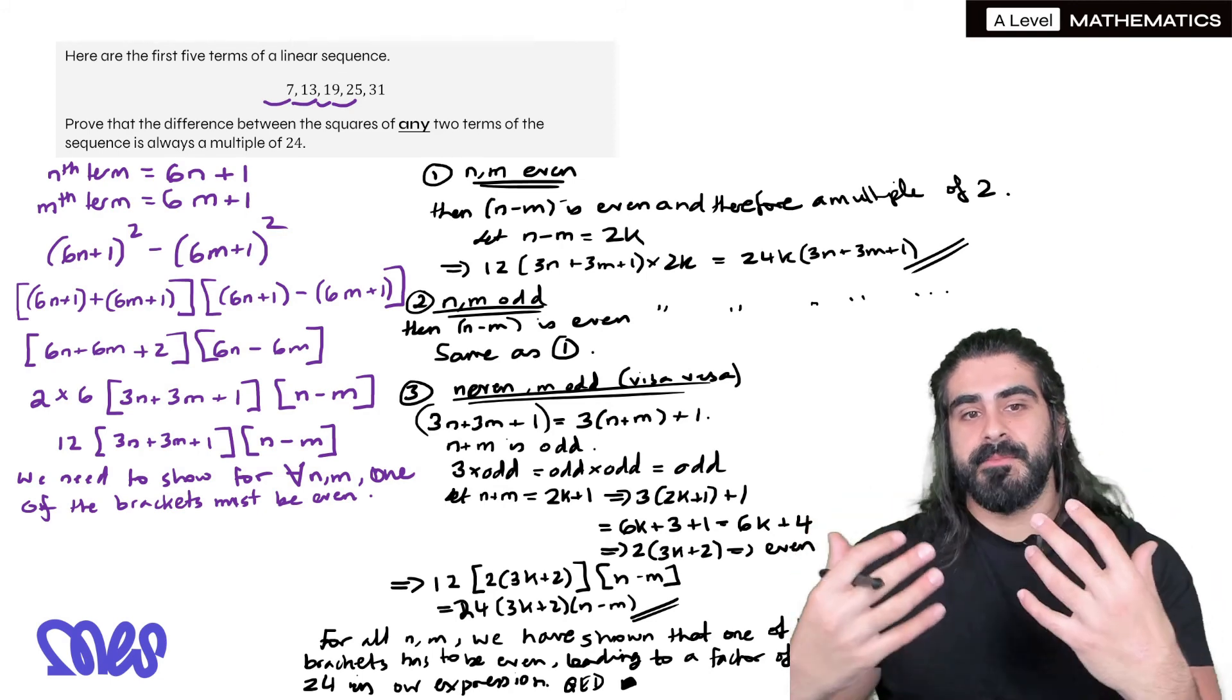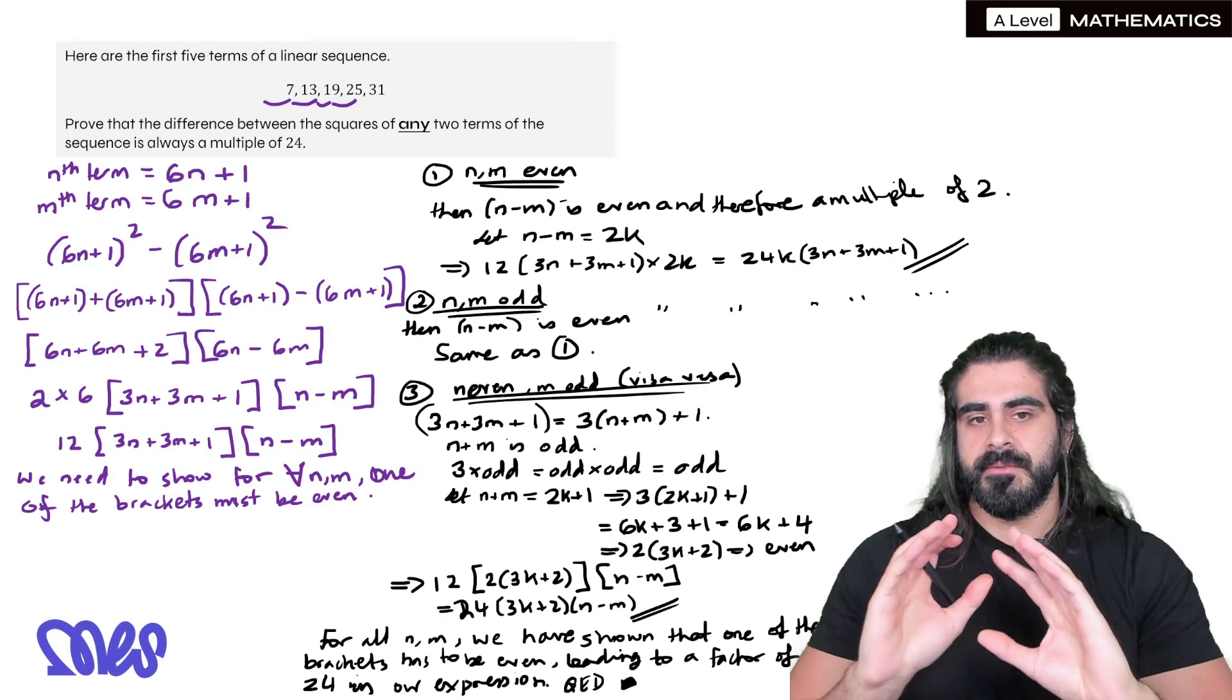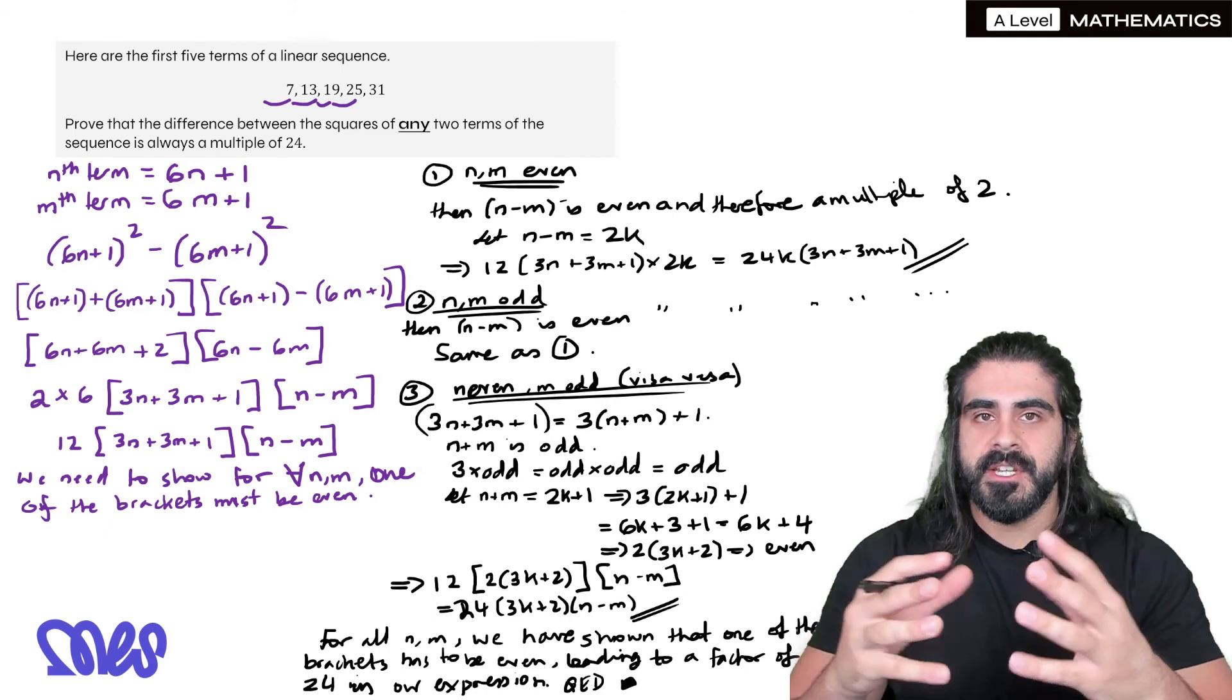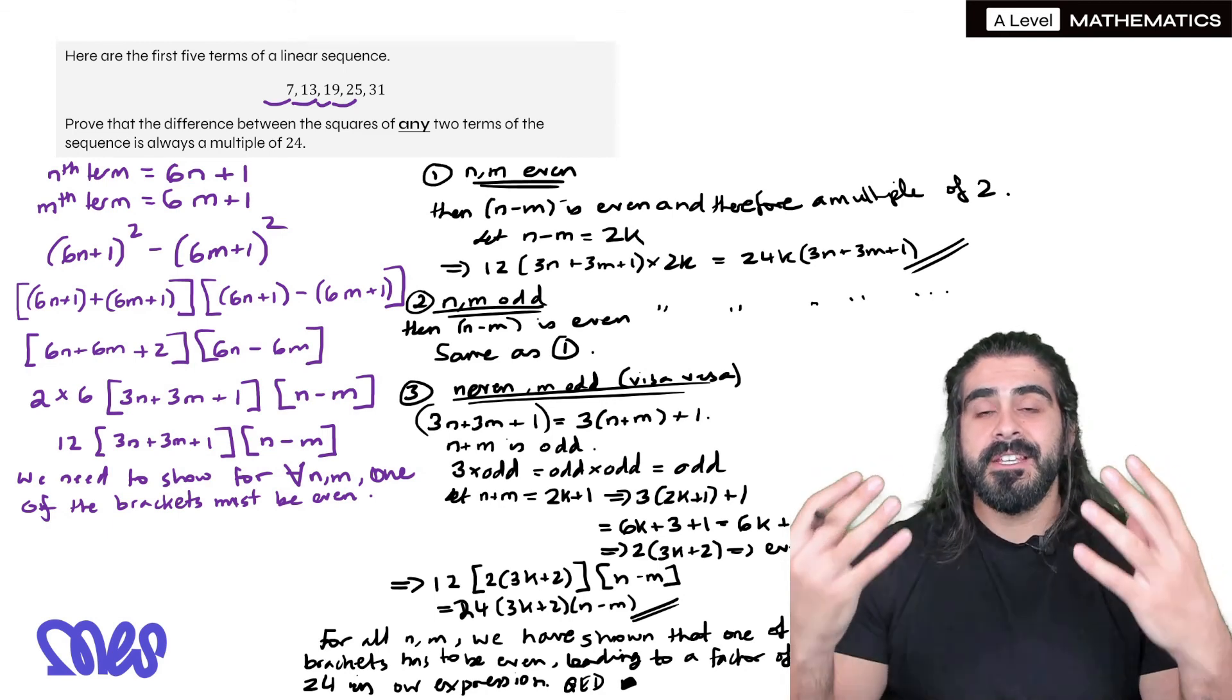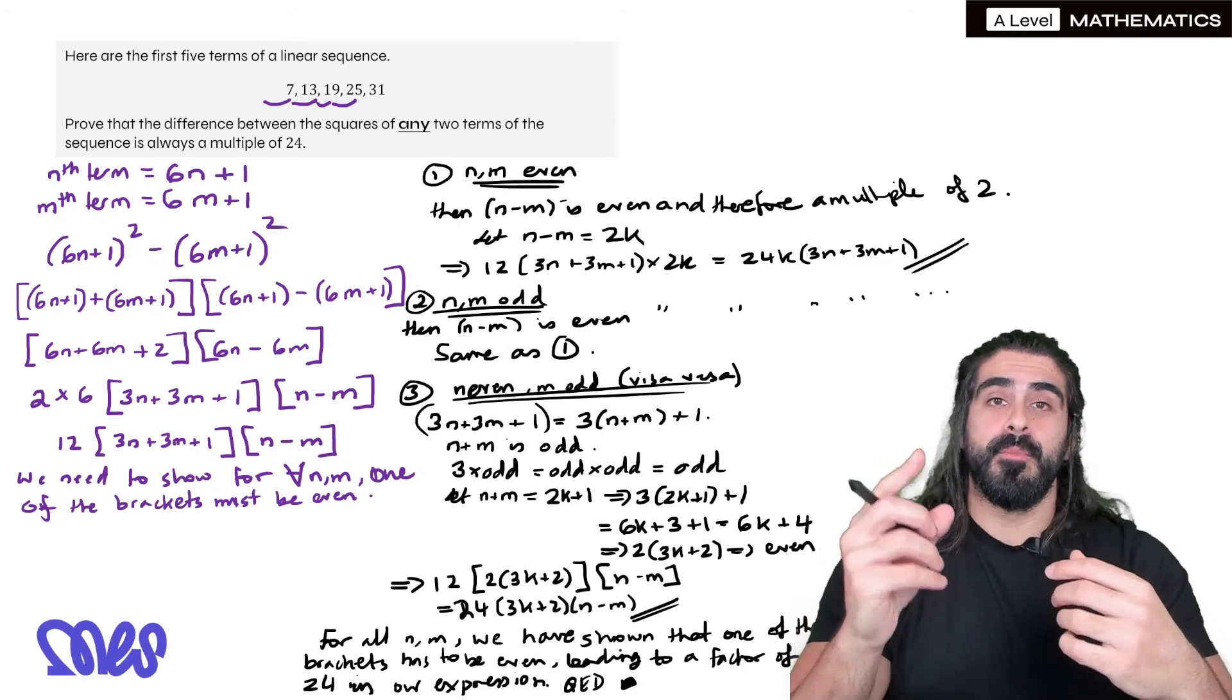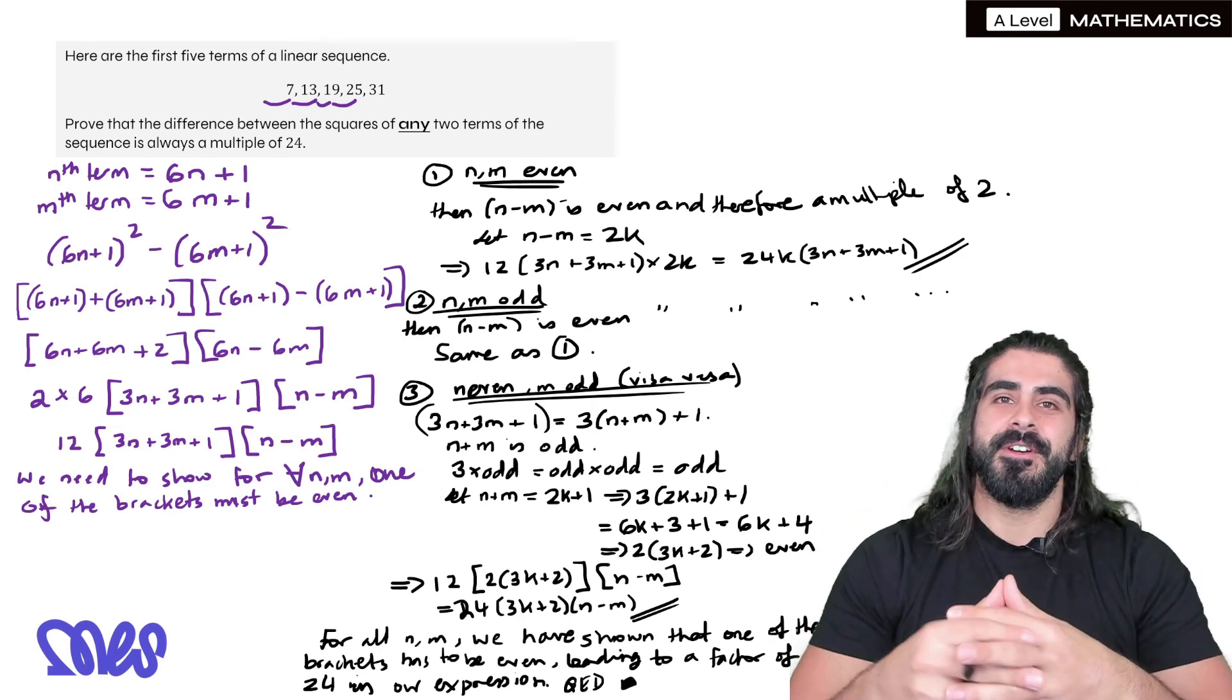But that's it guys, this is proofs. I've shown you probably the hardest type of proof they can ask you. Generally speaking in the A levels, because in year 13 we do proof by contradiction, which in a way is regarded as harder. But definitely in terms of AS concepts, this is the hardest proof you can get. So this concludes algebraic methods. So guys, if you learned anything today, please hit that like button and make sure you're subscribed for more maths content. We're going to move on to the binomial expansion next. So I look forward to seeing you guys in my next video. Peace.